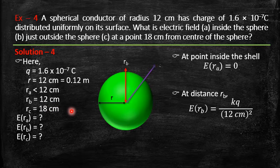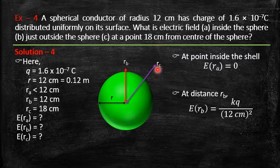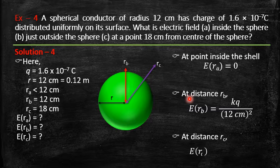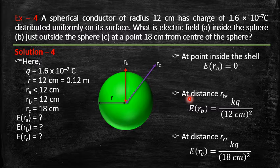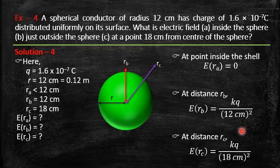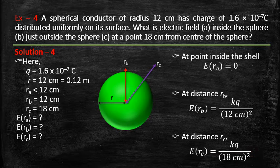The same point-charge approximation applies at 18 cm. So the electric field at r_C = 18 cm is E = kq/r², where q = 1.6×10⁻⁷ C and r = 0.18 m. Be careful about units when substituting values.